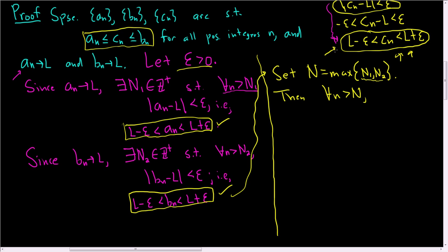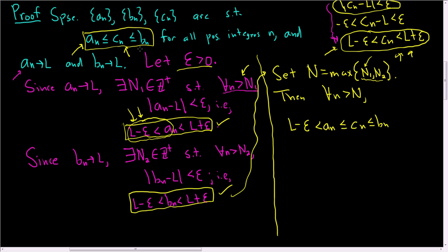Let's see if we can create this inequality. We know l − epsilon is less than a_n — this is true because little n is bigger than capital N, which is bigger than N_1, and that's the condition required. Then by the hypothesis, a_n ≤ c_n ≤ b_n. And now we need to show this is less than l + epsilon. We can use the condition that b_n < l + epsilon, because little n is bigger than capital N, which is bigger than N_2 since capital N is the maximum. So b_n is less than l + epsilon, giving us: l − epsilon < a_n ≤ c_n ≤ b_n < l + epsilon.